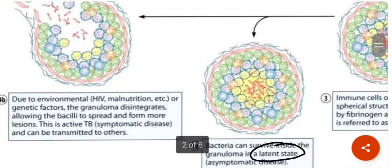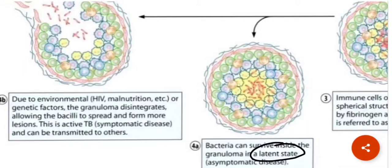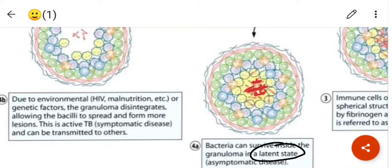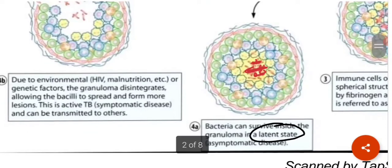The next step occurs due to environmental conditions or genetic factors — for example, HIV infection or malnutrition. When a person has HIV, their immune system becomes very weak, and the body cannot tolerate even normal bacterial infections. Due to the weakened immune system, the granuloma disintegrates, and the bacilli that had been surviving inside — possibly for many years or months — come out and spread, forming more lesions. This is called active tuberculosis.